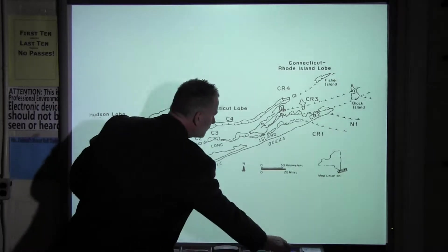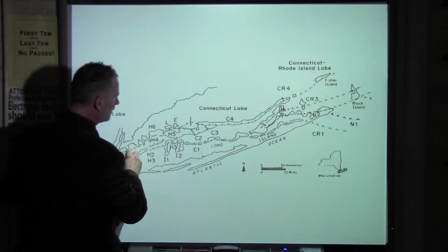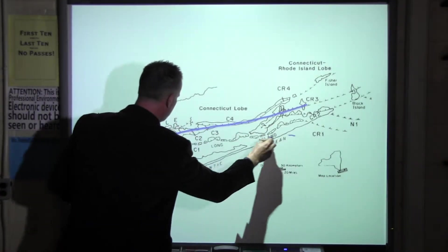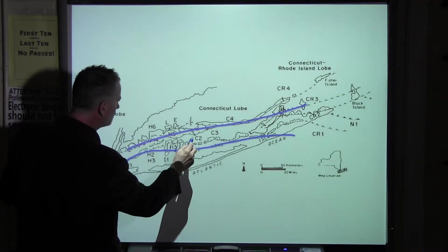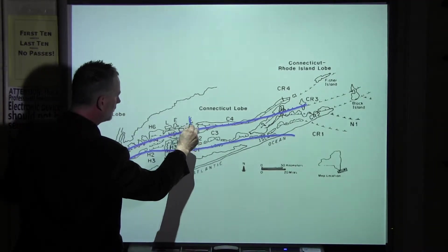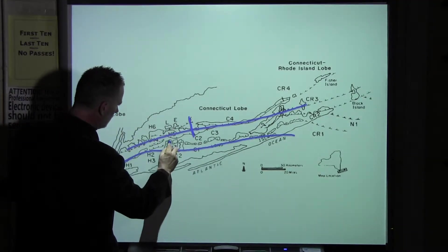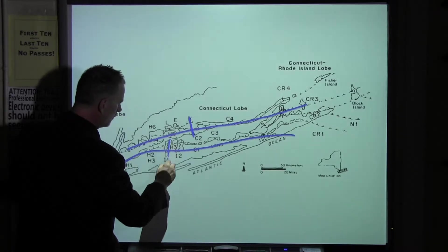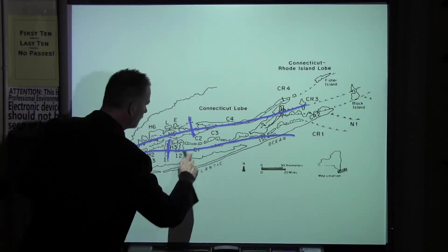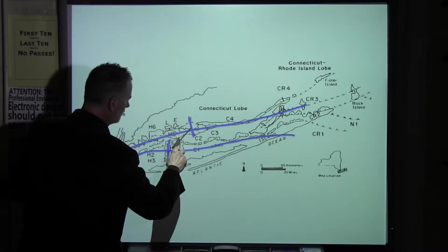On this map — Sirkin's map — we see straight lines of moraines, and it also shows how the boundary between the Hudson Lobe and Connecticut Lobe moves down to the southwest.